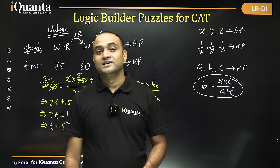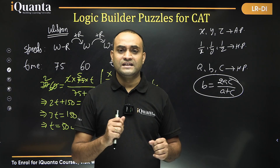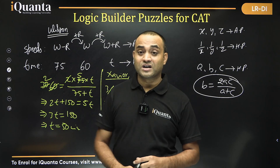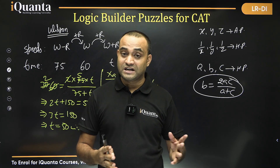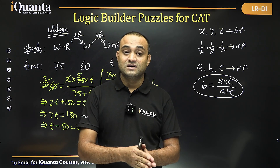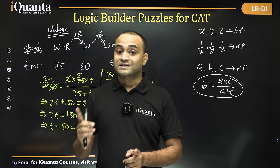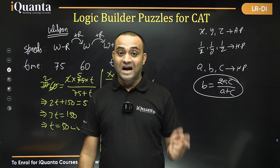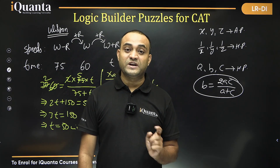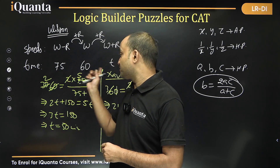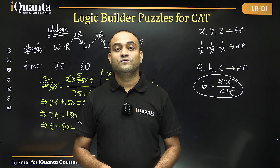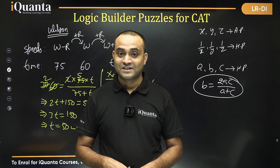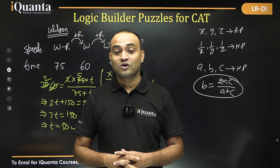You can find the answer very quickly using this method without the distance concept. Remember this important concept: when speeds are in arithmetic progression, times are in harmonic progression. If time is in arithmetic progression, speeds will be in harmonic progression. Given two values you can always find the third. I hope that is clear to all of you. Thank you.